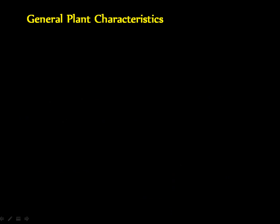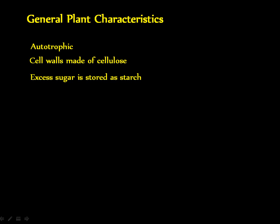Now let's state some facts about what makes something a plant. All plants are autotrophic, meaning plants are able to utilize sunlight in order to produce their own food. Their cell walls are made of cellulose, which is a durable polysaccharide used to support the plant cell's shape.